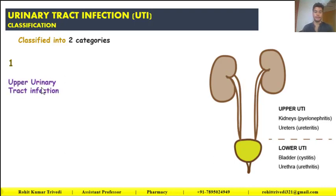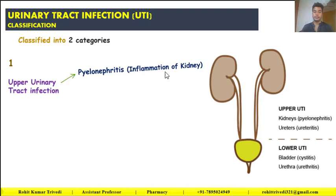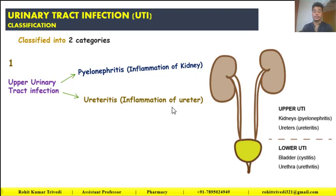The upper urinary tract infection. The very first is pyelonephritis — the inflammation of our kidneys. When inflammation due to urinary tract infection is found in the kidneys, it is called pyelonephritis. The second is ureteritis — the inflammation of our ureter. These are the upper parts of the urinary tract classification.